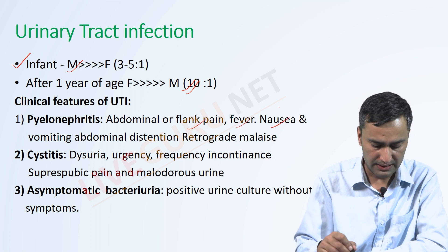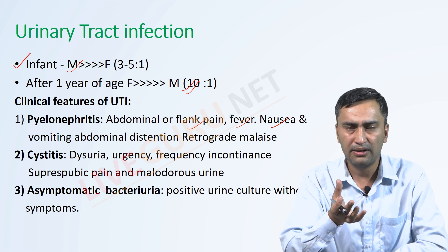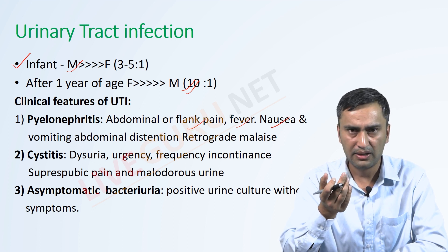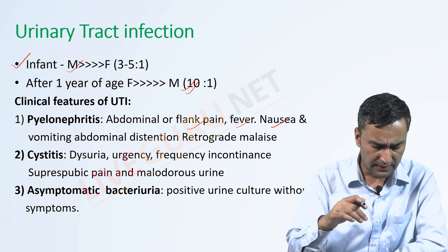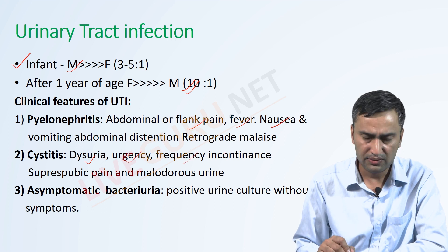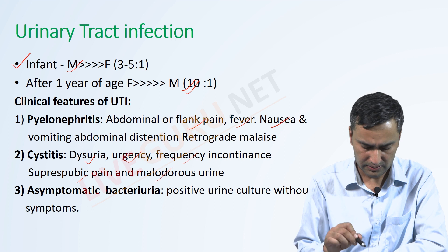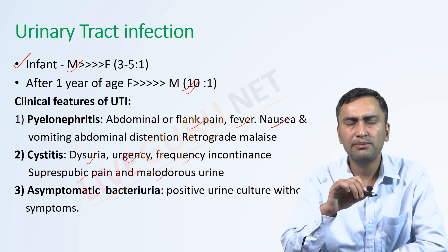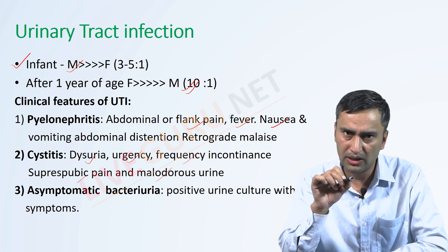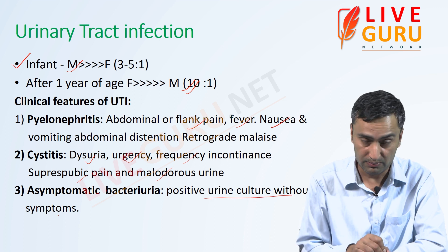In cystitis, the patient may present with dysuria, urgency, frequency, incontinence, suprapubic pain, and malodorous urine. UTI may also present asymptomatically, which is classified as asymptomatic bacteriuria — a positive urine culture but without symptoms.